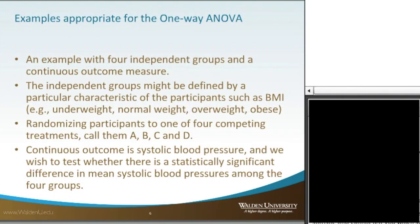Examples appropriate for the one-way ANOVA: one would be where you have four independent groups and a continuous outcome measure. The independent groups might be defined by a particular characteristic of the participants — say, their body mass index — where some are underweight, normal weight, overweight, or obese.